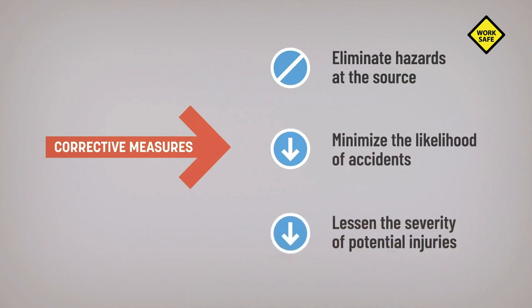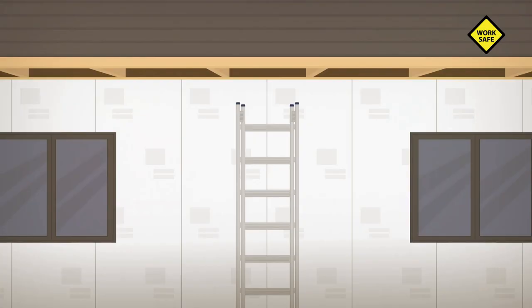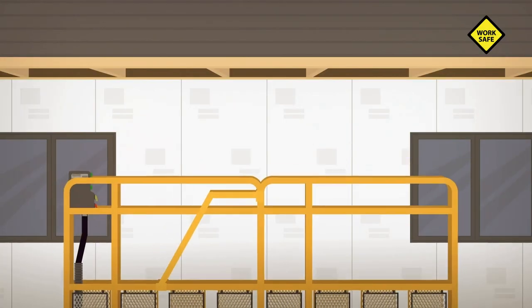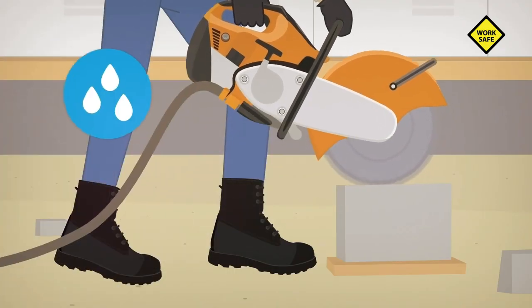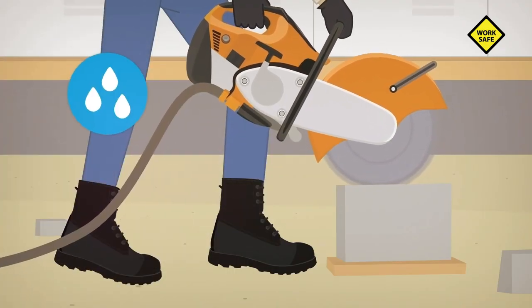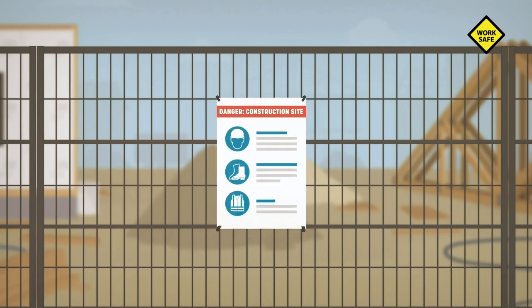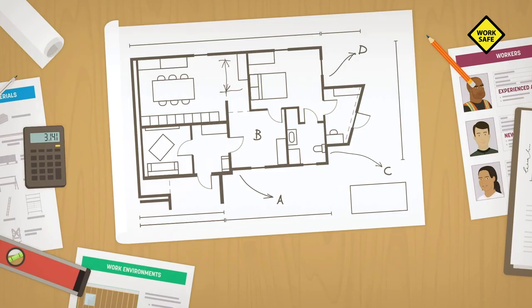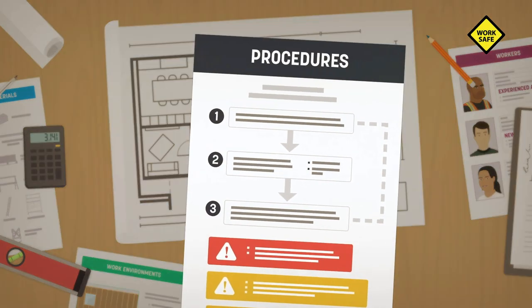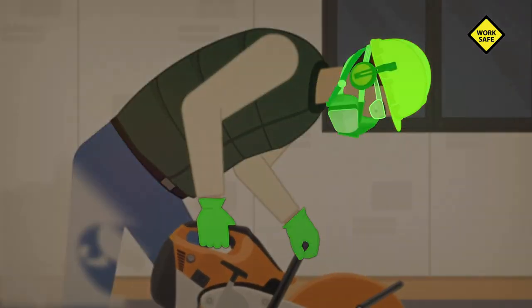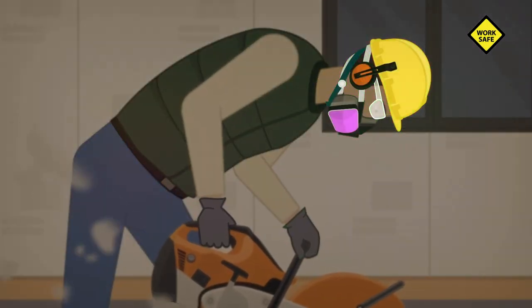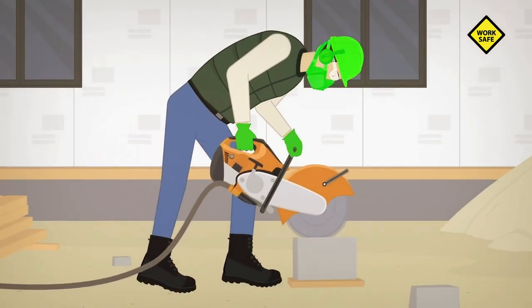You can correct the situation by putting in place corrective measures that eliminate hazards at the source, minimize the likelihood of accidents, or lessen the severity of potential injuries. There are many solutions to choose from: you can substitute materials or equipment, implement engineering controls, increase awareness, introduce administrative controls, or provide personal protective equipment. It's often necessary to combine several solutions to ensure effective results.